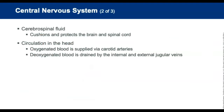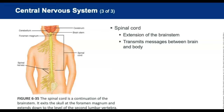In the central nervous system, cerebrospinal fluid (CSF) filters out impurities and toxins and cushions the brain and spinal cord. Oxygenated blood is supplied to the head via the carotid arteries, and deoxygenated blood drains via the internal and external jugular veins. The spinal cord is an extension of the brainstem that leaves the skull via the foramen magnum, is encased within the vertebral column, and ends at the level of the second lumbar vertebra. Its primary function is to transmit messages between the brain and the body.